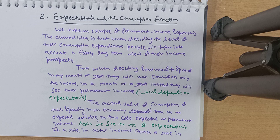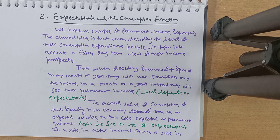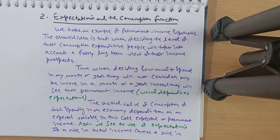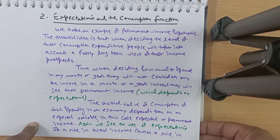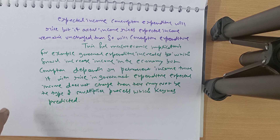A person with a permanent income of 5 lakh rupees per month who spends 4 lakh per month will still spend 4.5 lakh in a particular month if needed, because they know income will come next month. Consumption depends on permanent income. When deciding how much to spend, people consider their permanent income — which depends on expectations. If a rise in actual income causes a rise in expected permanent income, consumption will rise; if not, consumption will not increase.